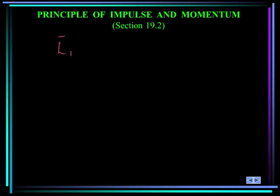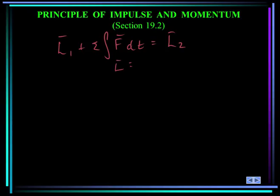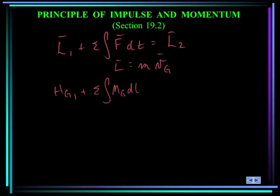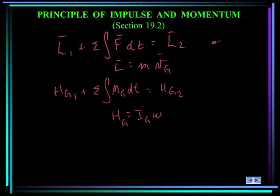The linear impulse-linear momentum equation states: the linear momentum at state one plus the sum of the integral over time of all the forces equals the linear momentum at state two, where linear momentum is mass times the velocity of the mass center. The angular impulse-angular momentum equation states: the angular momentum about the mass center at state one plus the sum of the integral of the moments about the mass center over time equals the angular momentum at state two, where angular momentum is I_G times omega. The top equation yields two scalar equations (x and y), and the angular equation yields one scalar equation, giving three equations total to solve for three unknowns.